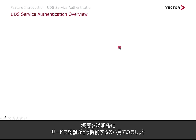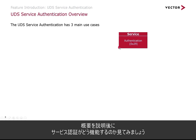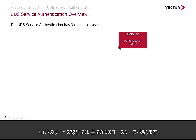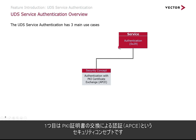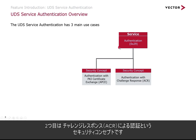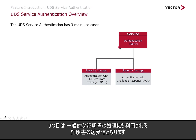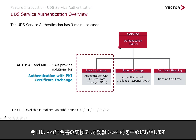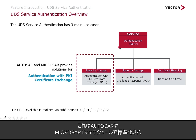Let's have a short overview and a look at service authentication — how does it work? From a UDS point of view, there are three main use cases for service authentication. The first use case is a security concept: authentication with PKI Certificate Exchange, or APCE. The next use case, also a security concept, is authentication with challenge response. And the third use case is transmit certificate, which is used for general purpose certificate handling. What I want to show you today concentrates on the security concept — authentication with PKI Certificate Exchange — which is standardized in AutoSAR and also in the MicroSAR DCM module.